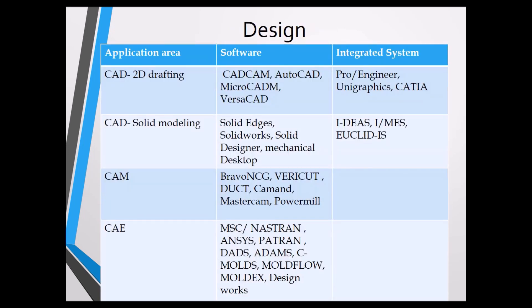For designing we have different types of software. Application areas include CAD for drafting, solid modeling, CAM, and CAE. Related software includes AutoCAD, MicroCAD, VERSACAD, and it integrates with software like Pro/E (CREO), Unigraphics, and CATIA.